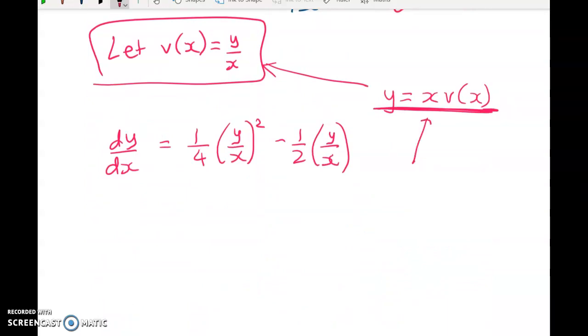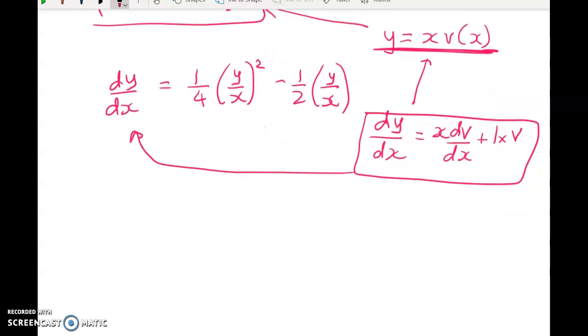Well, I just need to use the chain rule. So DY by DX is going to equal X times DV by DX plus 1 times V, using the product rule. So instead of having any Y's in my expression, I'm now shifting everything to be in terms of V and things are about to get dramatically better.